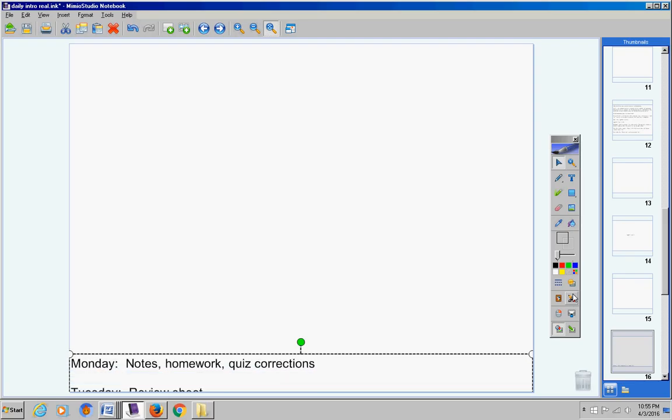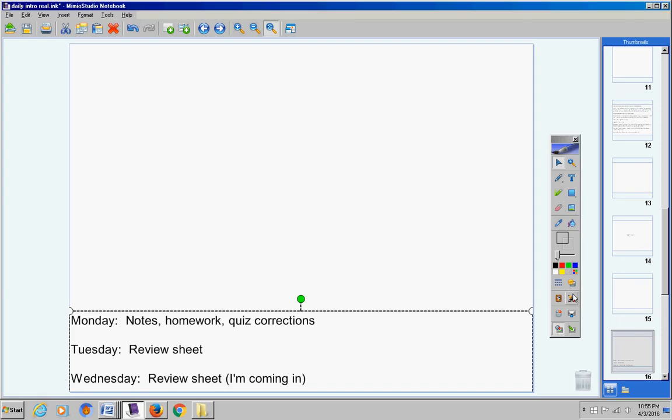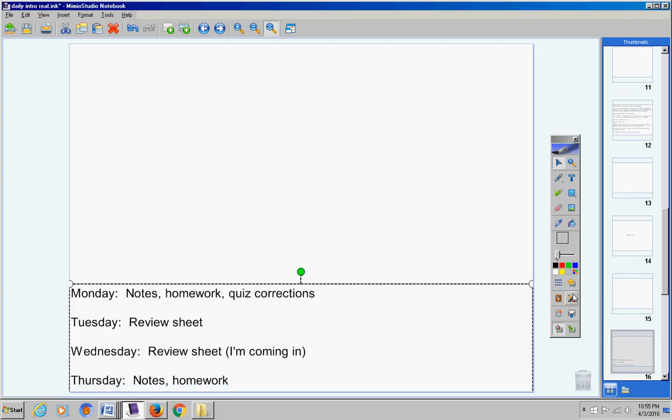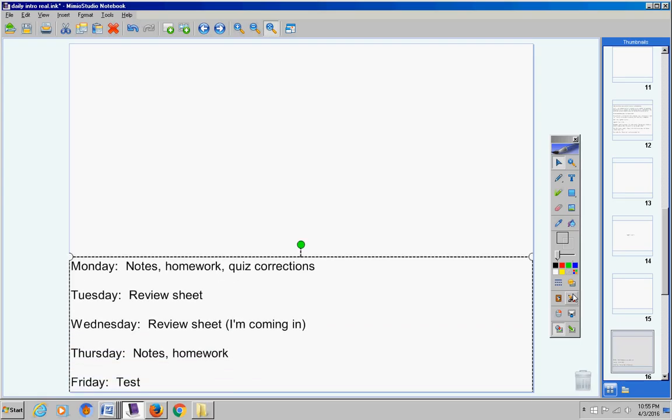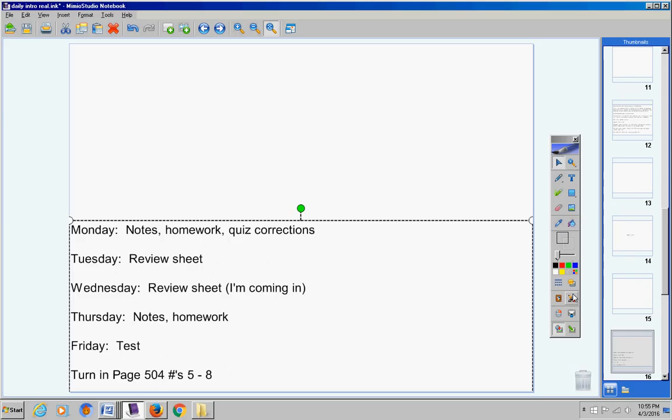First of all, here's the schedule for the week. Today we're going to take notes, work on homework, and watch a quiz correction video. Tuesday's going to be a review sheet. Wednesday will be a review sheet. I'm coming in to talk to you in the art room. So Wednesday I'm coming in. Thursday, notes and homework. Friday will be a test.